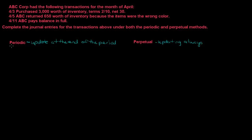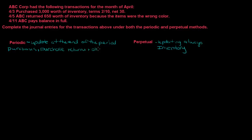Under the periodic method there are a couple accounts that you will not see under the perpetual method. The perpetual method uses inventory. Under the periodic method we use purchases, and there are a couple accounts related to purchases: purchase returns and allowances, and purchase discounts. So there are a couple more accounts you need to know for the periodic method. The perpetual method is just inventory in and inventory out.